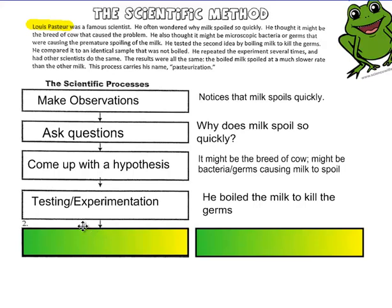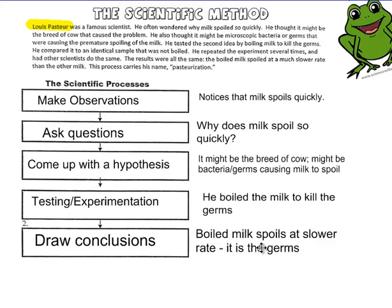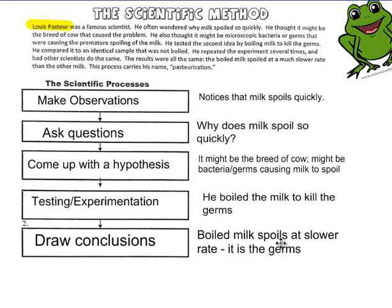Finally, he looked at the results. I mean, you could say results in between here. But, it's to draw conclusions as a result of doing the tests and the experiments. Finally, can you pause the video one last time and write down what his conclusion was? And we're back. Boiled milk spoils at a slower rate. So, he's concluded that boiling the milk kills the germs. And that killing the germs allows the milk to stay fresh a lot longer.